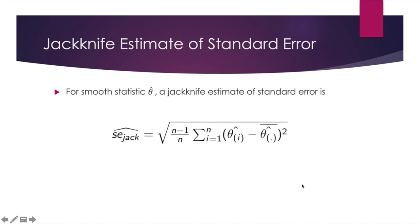The other important application for the Jackknife method is to estimate standard error. So let's get familiar with the formula first. A Jackknife estimate of standard error is n minus 1 divided by n times the sum of the square difference of Jackknife replicate and the mean of these Jackknife replicates. And in the end, put everything inside the square root.